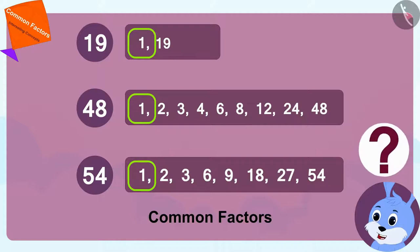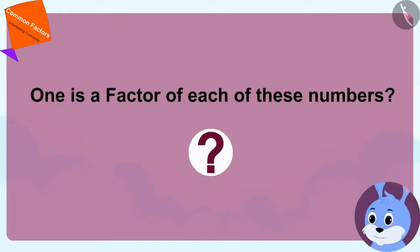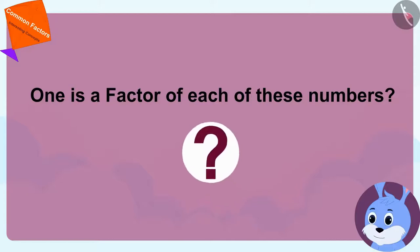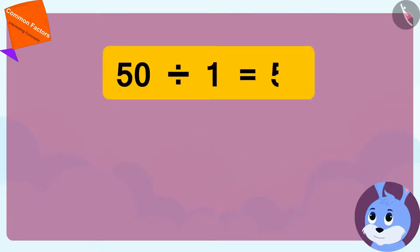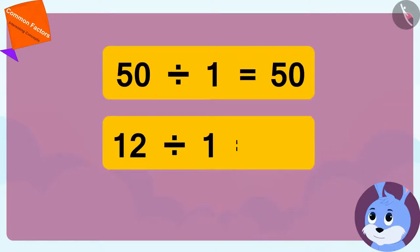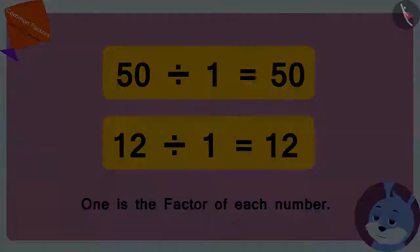How can it be possible that one is a factor of each of these numbers? Children, is what Bunny is saying correct? Is one a factor of every number? We can divide any number by one, so one is the factor of each number. Bunny's point is absolutely correct.